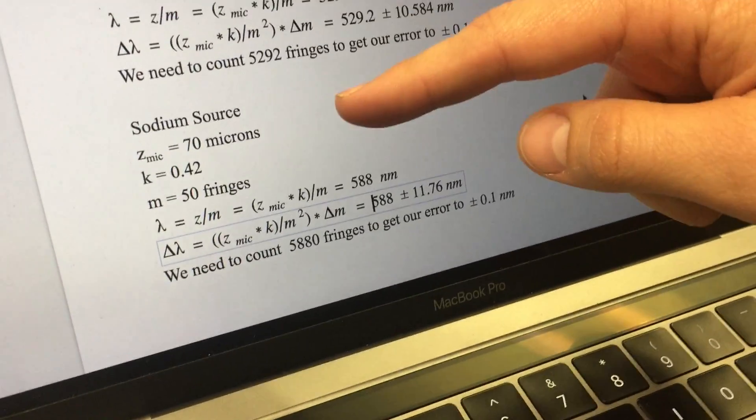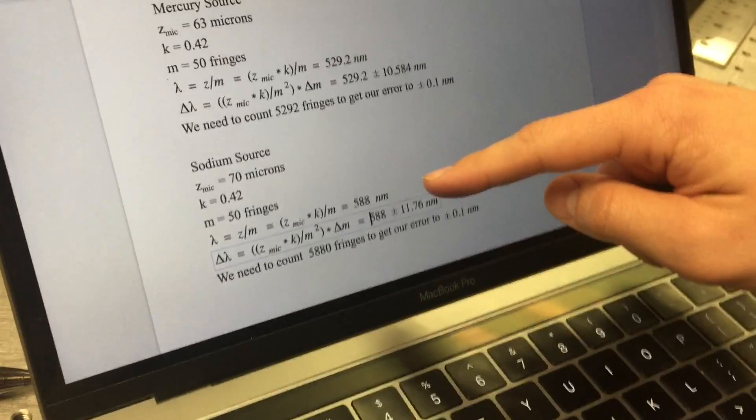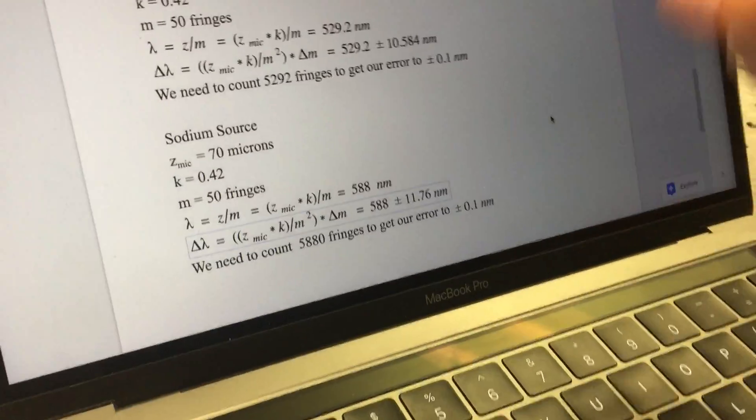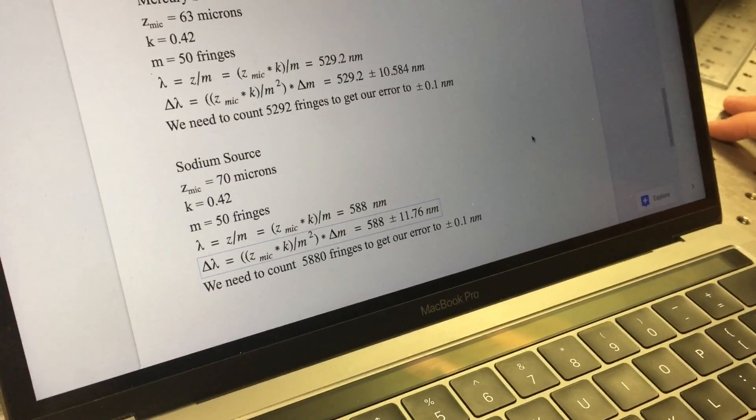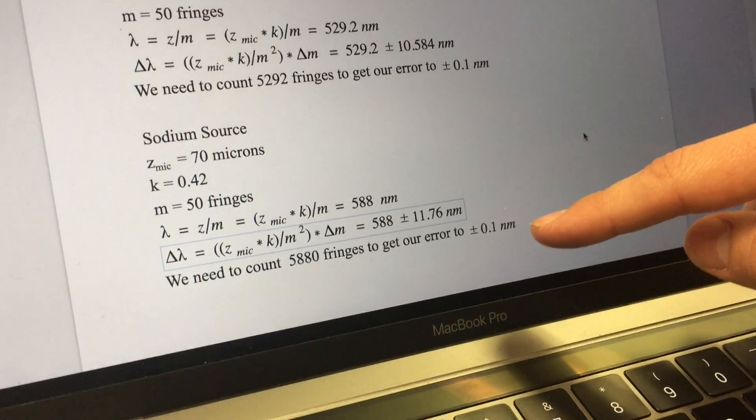Counting through 50 fringes, we displaced our micrometer 70 microns, and we found a wavelength of 588 nanometers, plus or minus an error of 11.76 nanometers. To get an error of plus or minus 0.1 nanometers, we would need to count 5,880 fringes.